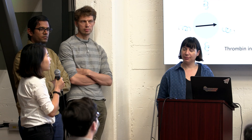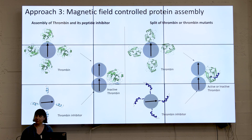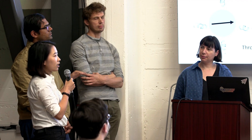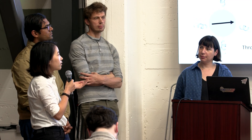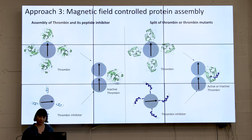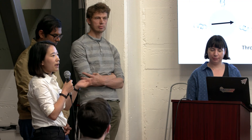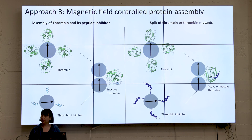Another approach we thought about is using a magnetic field to control protein assembly. You can have thrombin on magnetic beads and also a thrombin inhibitor — when the magnetic field is applied, they can be brought together, and the affinity between thrombin and the inhibitor can be tuned through protein engineering. Another way is to split thrombin into two parts: the N-terminal first and second structures. When a magnetic field is applied, the thrombin will be completed. The thrombin we put in can be engineered to be the active or inactive format — to compete with native thrombin, make it anti-clotting, or inhibit its function.